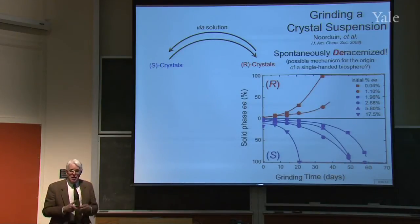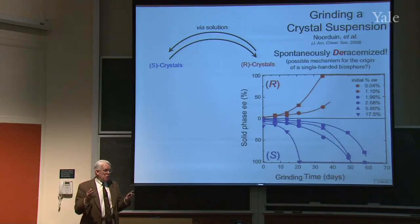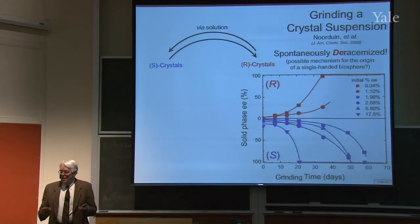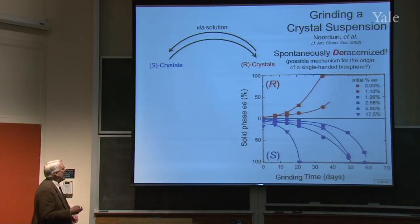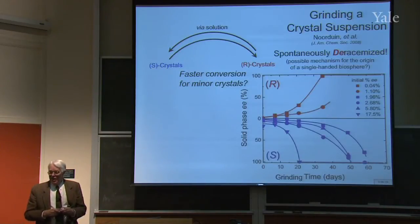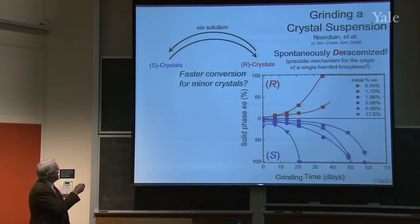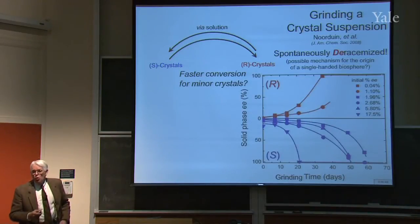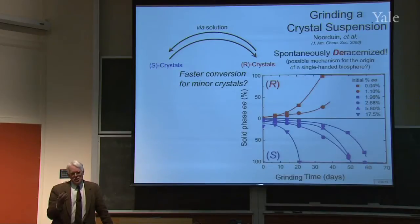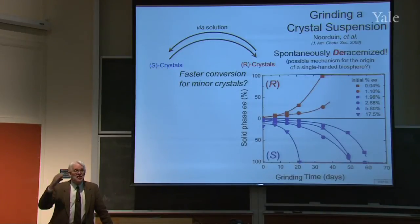This is very different from what we were talking about before, where the rate law guarantees that whatever's in excess goes more rapidly to the minor form, and it's guaranteed to come out 50-50. This one goes exactly the opposite. So this was a great puzzle — what caused this to happen. It could be faster conversion of the minor crystals: if you have more R than S, it's faster to go from S to R than R to S. What would that say about the rate law? If the less concentration you have — the fewer crystals — the faster it goes. It's an inverse rate law.